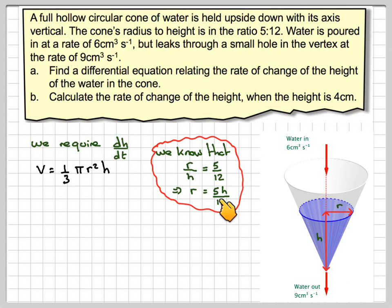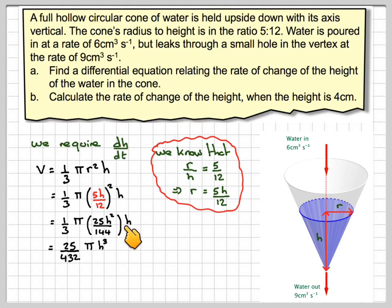Then what we do, we take that and substitute that in instead of r. So we get 1/3 π times (5h/12)² times h. So the next step would be to square that. 5² is 25, 12² is 144, h² is h². And then combining it with the 3, we get that the volume is 25/432 π h³, because it's h² times h.